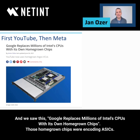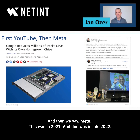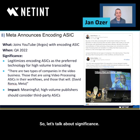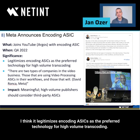Google replaced millions of Intel CPUs with its own homegrown chips, and those homegrown chips were encoding ASICs. Then we saw Meta — this was in 2021, and again in late 2022. The significance is that I think it legitimizes encoding ASICs as the technology for high-volume transcoding.